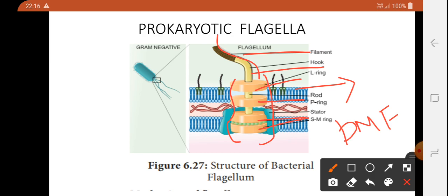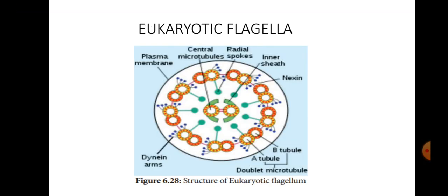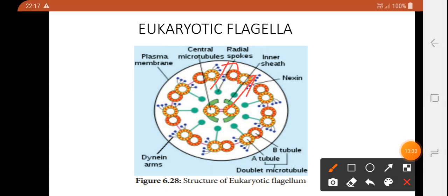This is the eukaryotic flagella. Unlike the bacterial flagellum, the eukaryotic flagellum contains nine pairs of microtubules arranged in a 9+2 arrangement. It has a plasma membrane, central microtubules, and radial spokes connecting the outer pairs to the center. This is the 9+2 arrangement of the eukaryotic flagella.